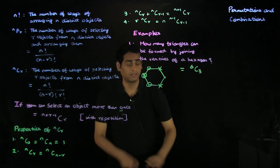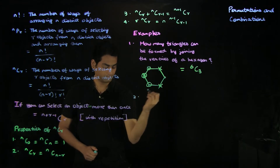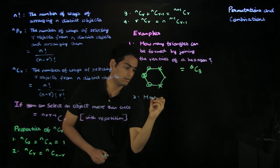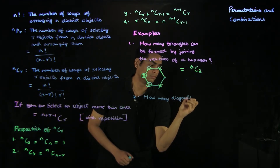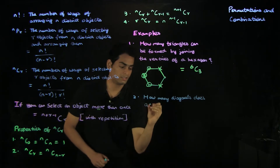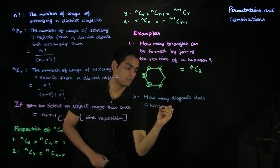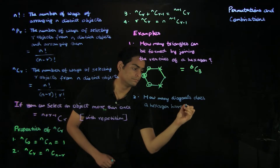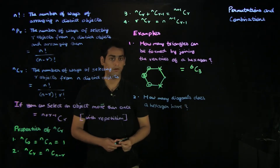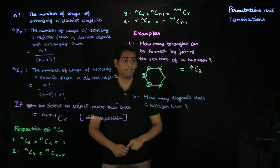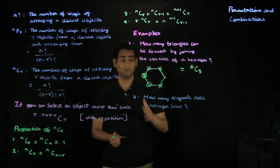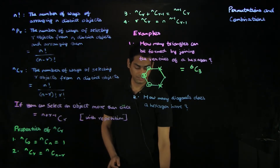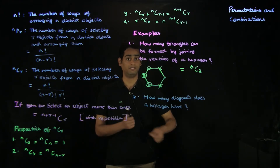A related question is: how many diagonals does a hexagon have? Looking at the previous example, you might be tempted to say the answer is 6C2, because a diagonal is defined by two vertices of a hexagon. Well, that's almost true, but you've got to be careful that all combinations are valid.